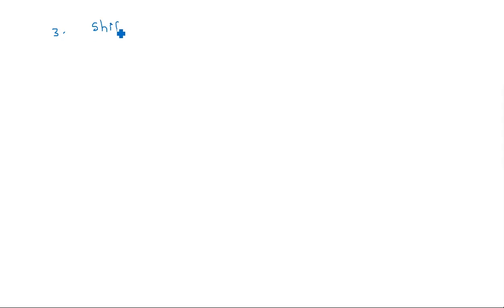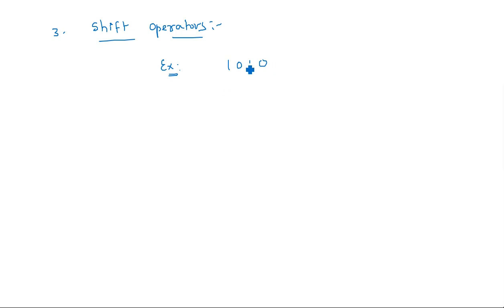The third type is shift operators. For example, if you have a four-bit value 1010 and you shift it to the right, the bits move positionally — the first bit moves to position one, the second to position two, and so on. New data comes into the vacated position. That is how the shifting operation is performed.